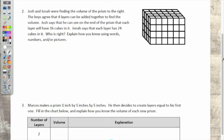So Josh and Jonah were finding the volume of the prism to the right. Don't attempt to build it. We don't have enough cubes. Okay. I said that in one minute. What did they do? They tried to build it, and guess what? They didn't have enough cubes. Okay.